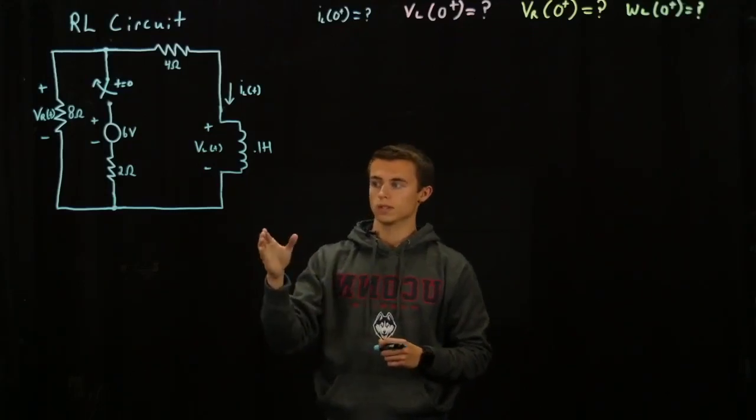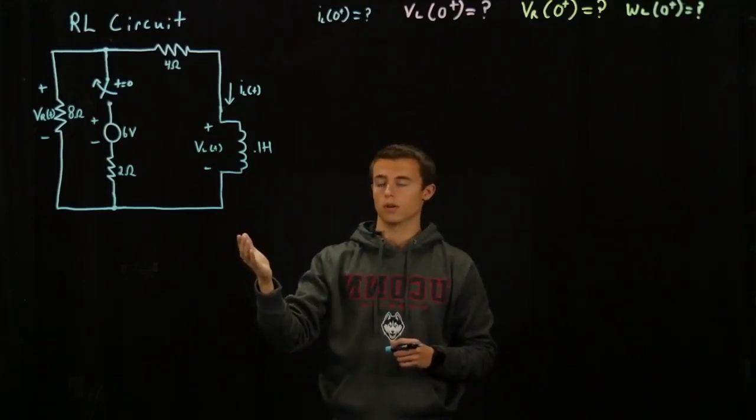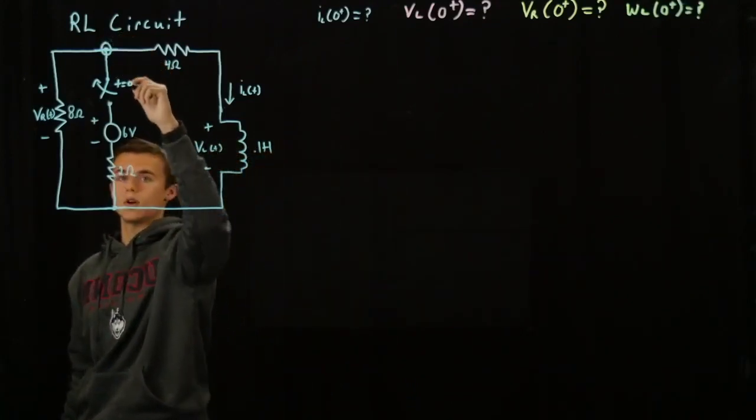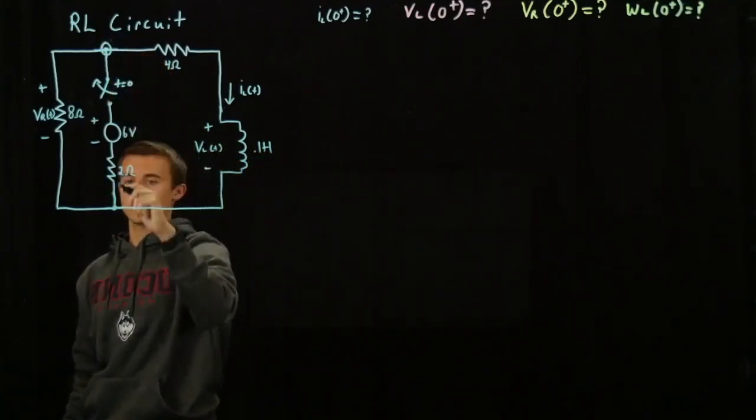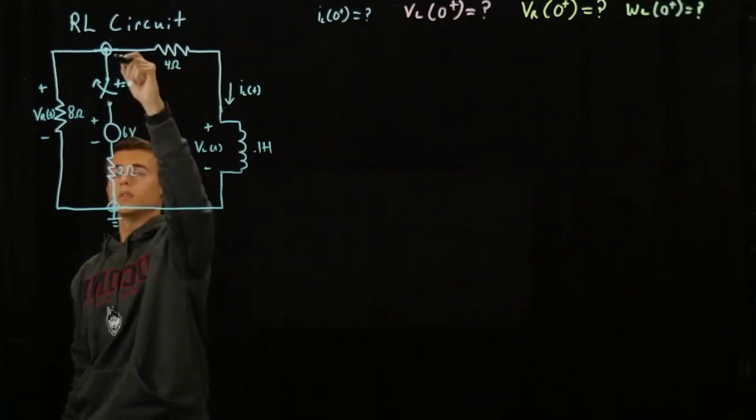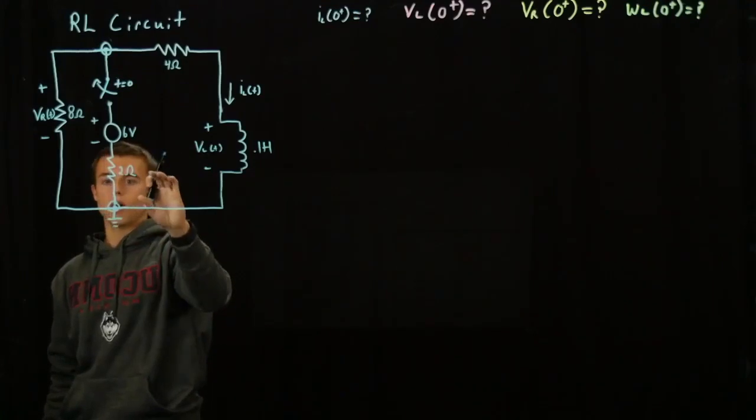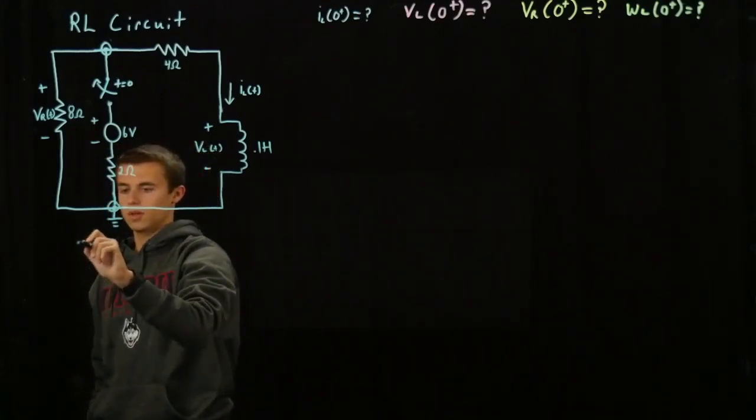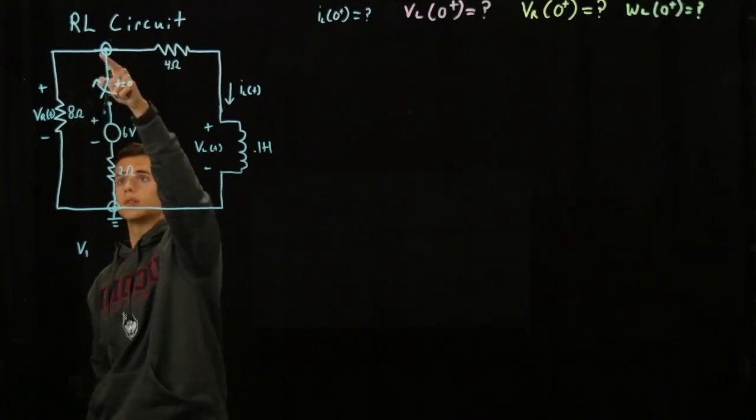So to solve this we are going to do node voltage right here with this node, this being the only acting node and this being ground. So to get node voltage we can do this loop.